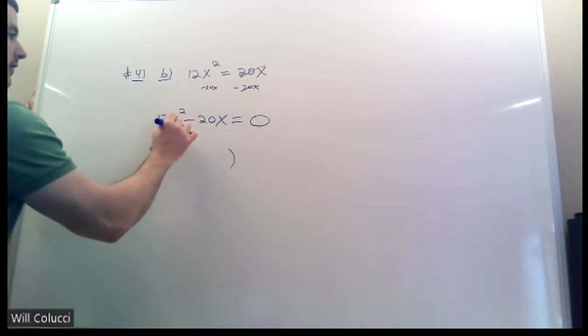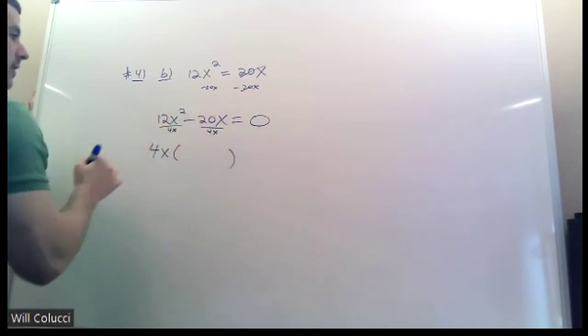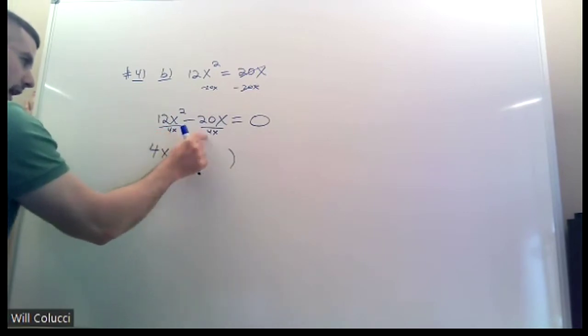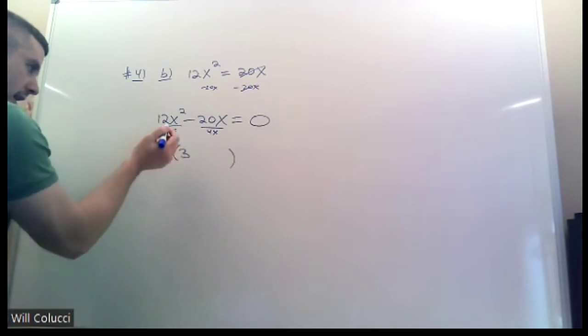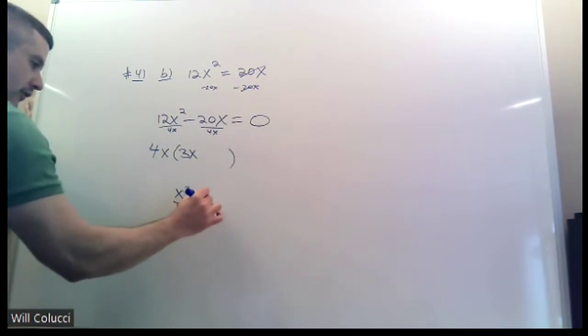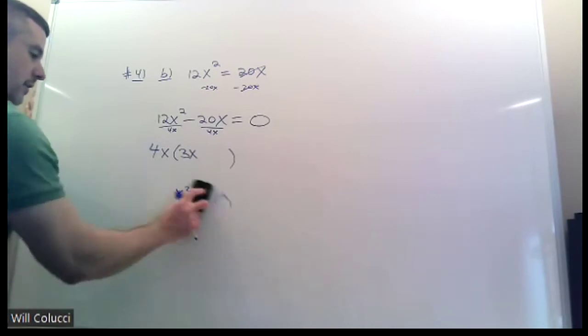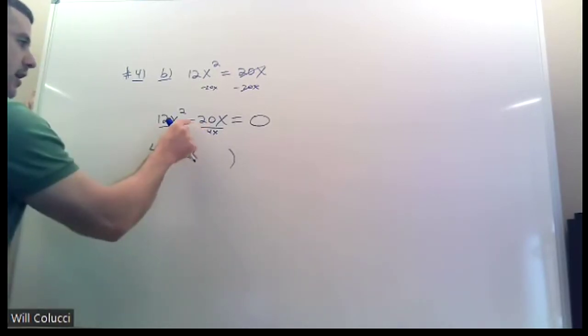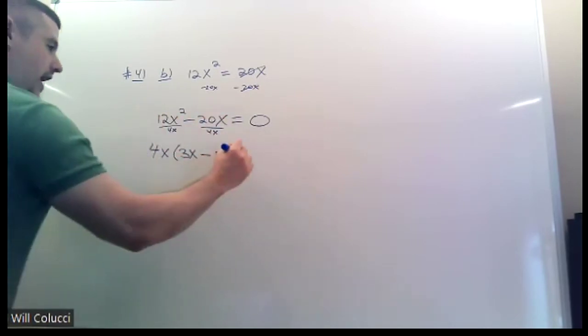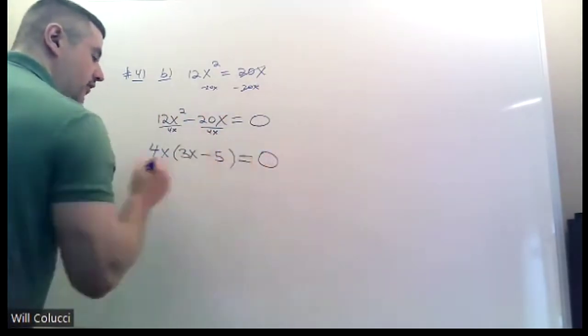And I told you in class a million times that if you need to do this, then do this. You don't have to do it in your head. You can put the 4x underneath them and divide them away. 12 divided by 4 is 3. x² over x leaves you with 1. If you don't believe me, x² is x·x. Those cross out and leave you with 1. Here, negative 20 divided by 4 is negative 5. Those x's cross out. And that equals 0 is still there.